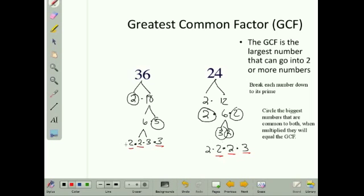I have a 2 here, but I don't have another 2 over here. So, these are all my common elements. When I multiply those all together, I get 2 times 2 times 3, or 12. The largest number that can go into 36 and 24 is 12.